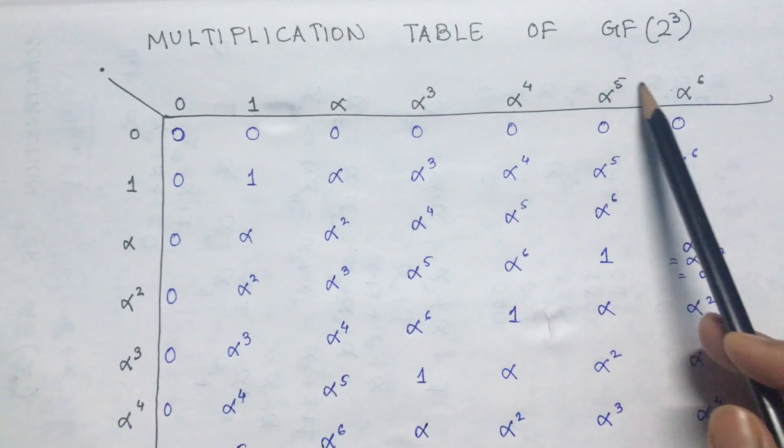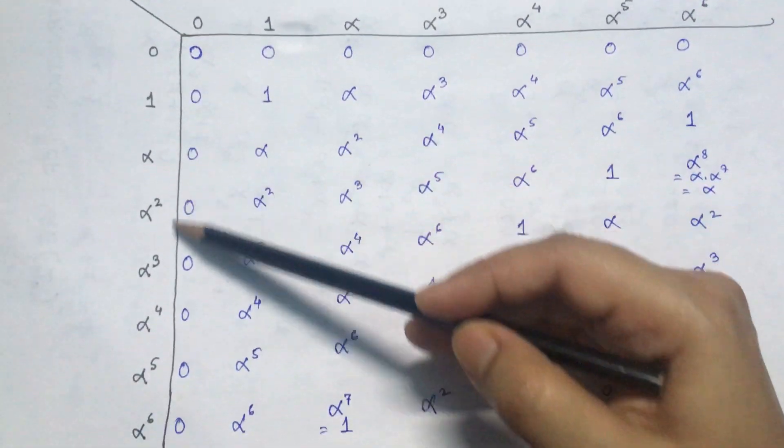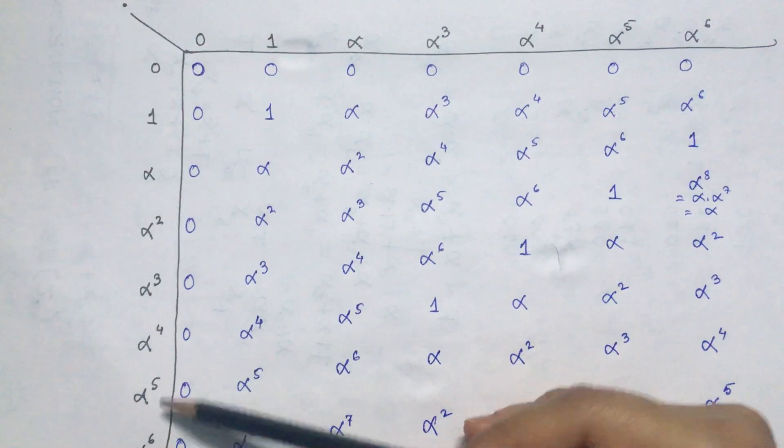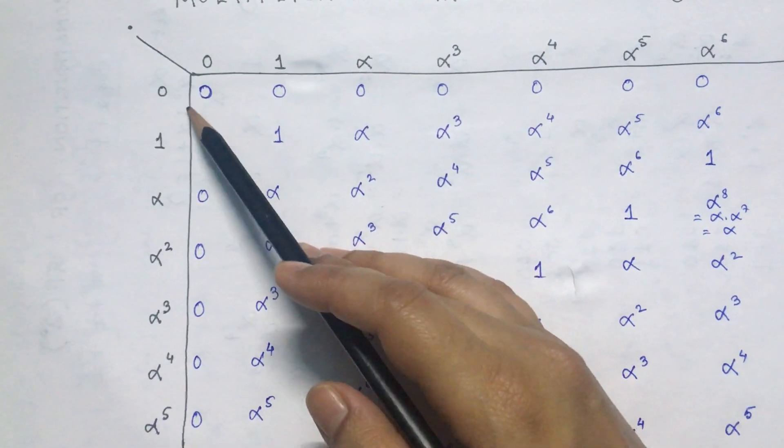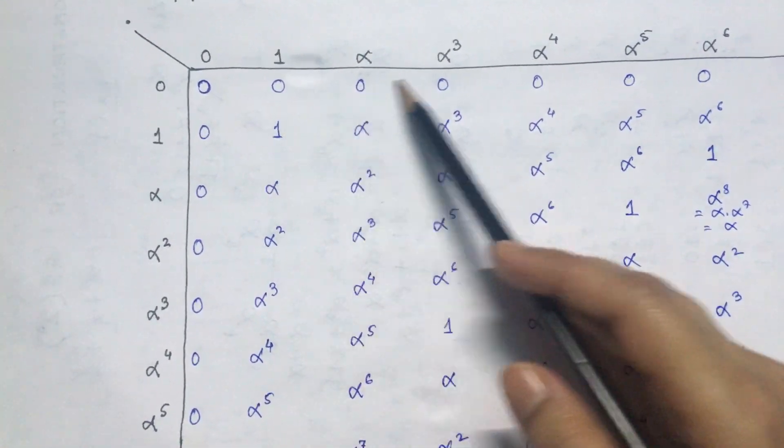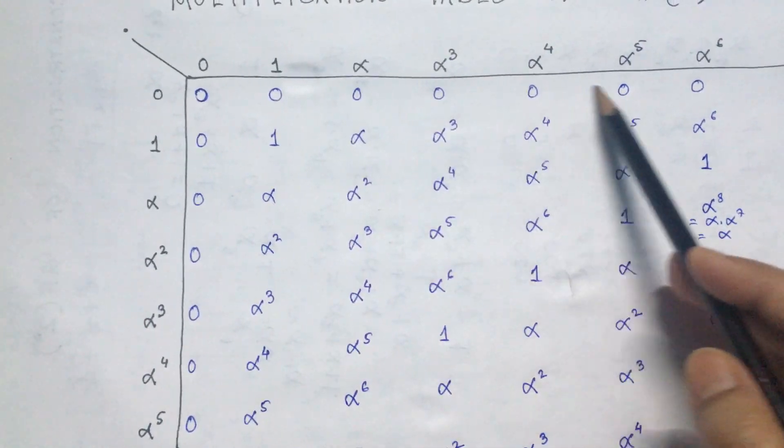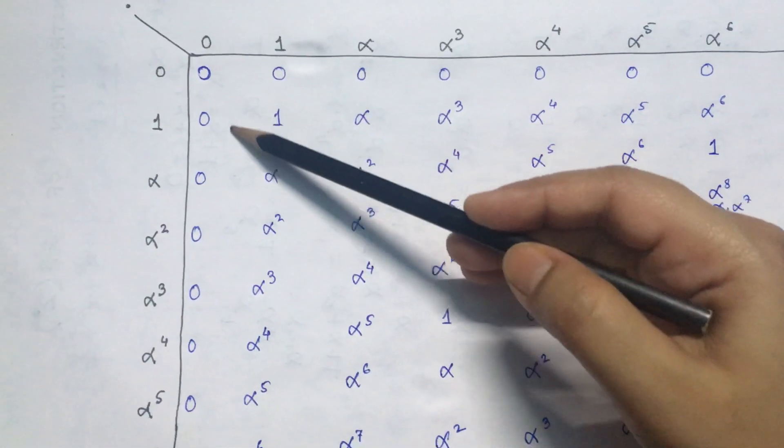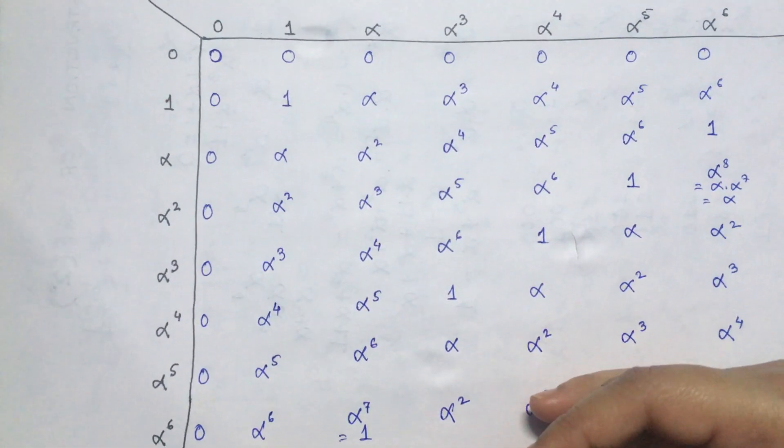Once again, here are the elements, 0 to alpha to the power 6. Over here also 0 to alpha to the power 6. If we multiply any element by 0, we get 0. So the first row is all 0s. By similar reasoning, the first column is also all 0s.